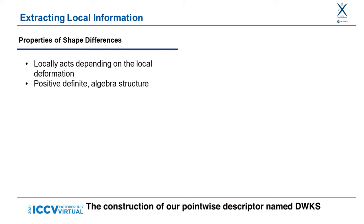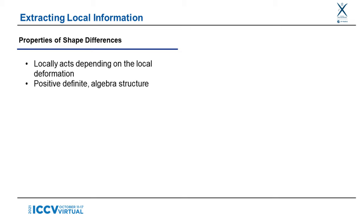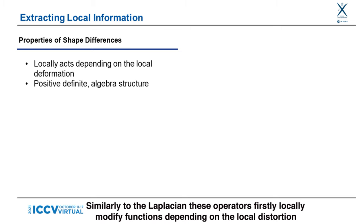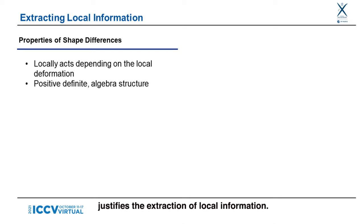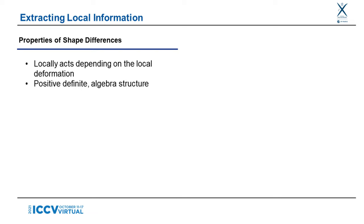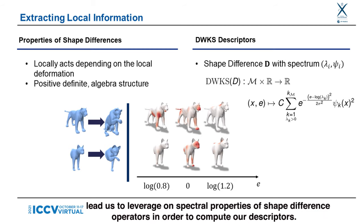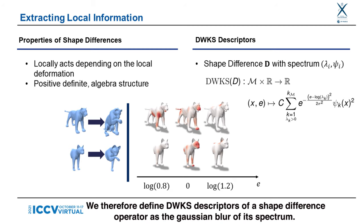The construction of our pointwise descriptor, named DWKS, originates from an analysis of properties of shape difference operators and of their similarities with the Laplacian operator. Similarly to the Laplacian, these operators firstly locally modify functions depending on the local distortion, which justifies the extraction of local information. They furthermore possess interesting algebraic properties, namely positive definiteness and a multiplicative algebra structure, which motivates the form of our descriptor. The comparison with the Laplacian led us to leverage spectral properties of shape difference operators in order to compute our descriptors. We therefore define DWKS descriptors of a shape difference operator as the Gaussian blur of its spectrum.